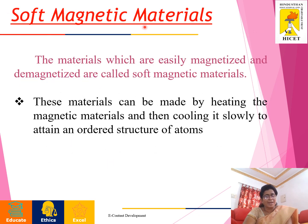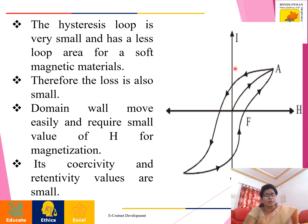Then we have to see soft magnetic materials. The materials which are easily magnetized and demagnetized are called soft magnetic materials. These materials can be made by heating the magnetic materials and then cooling it slowly to attain an ordered structure of atoms. The hysteresis loop is very small and has a less loop area for soft magnetic materials. Therefore, loss is also small. The domain wall moves easily and requires a small value of H for magnetization. Its coercivity and retentivity are small.